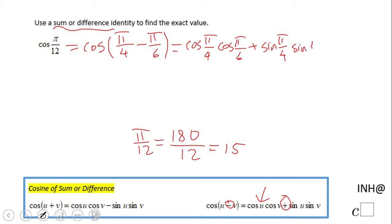Now there's nothing else than replacing. Cosine of π/4, you can use the unit circle or hopefully you've memorized them - cosine of π/4 is an easy one, square root of 2 over 2. Cosine of π/6 is square root of 3 over 2. Sine of π/4 is square root of 2 over 2. Sine of π/6 is 1/2. So we have square root of 6 over 4 for the first part plus square root of 2 over 4.